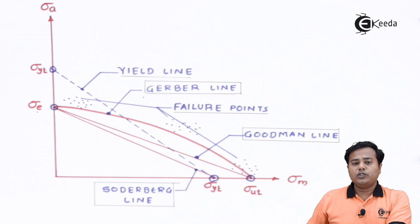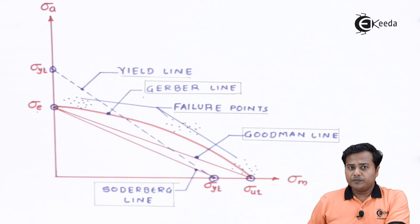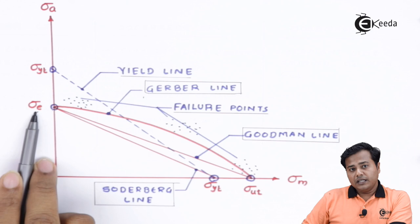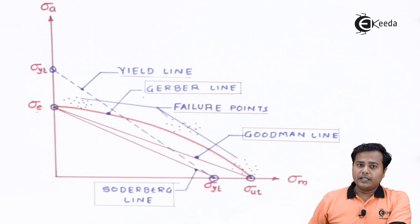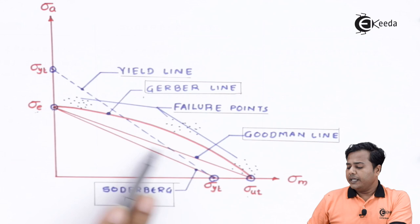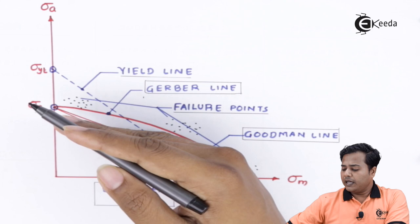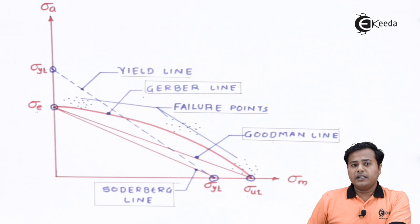The second line connects the ultimate strength with the endurance limit. Unlike the Gerber line, this line is straight in nature. It avoids all the failure points — all failure points lie outside this particular line. So this straight line divides the safe and unsafe regions clearly, whereas the earlier line divided them with a parabolic curve.